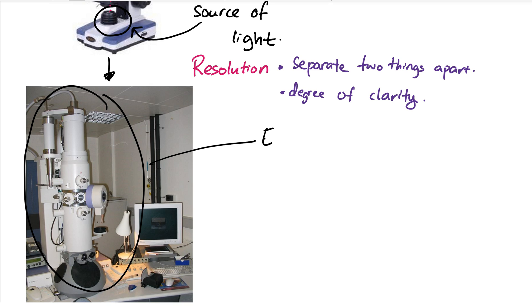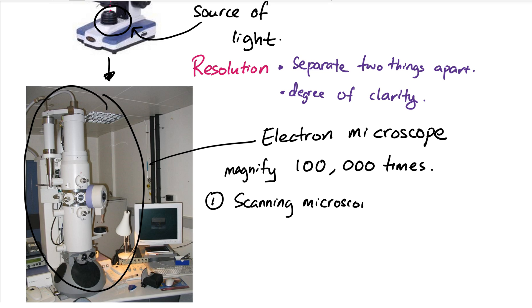Light microscopes have limitations, and as technology becomes better, now we have electron microscopes. This structure is an electron microscope. It has a magnification of a hundred thousand, so you can magnify structures a hundred thousand times bigger. It scans through electrons, using electrons as a source of observation. It has two types of electron microscopes.